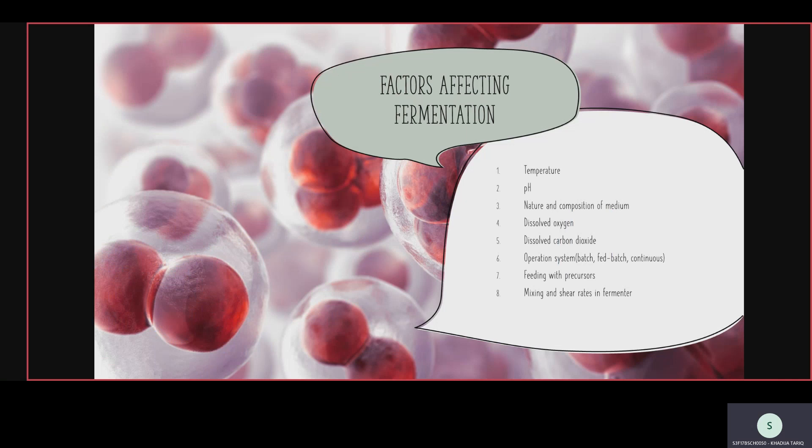The factors affecting fermentation are eight in number: number one, temperature; number two, pH — at the bioreactor diagram we see that temperature monitor and pH monitor are present. Nature and composition of medium; dissolved oxygen — in fermentation without requiring oxygen we remove the oxygen; dissolved carbon dioxide; the operating system, which has three types: batch, fed-batch, and continuous; feeding with precursors — microbial cells or inoculum formed by microbial cells and culture medium; and mixing and shear rate in the fermenter.